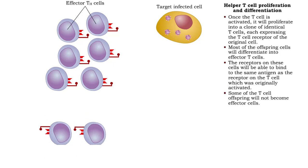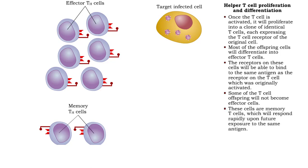Some of the T cell offspring will not become effector cells, but remain as memory T cells, which will respond rapidly upon future exposure to the same antigen.